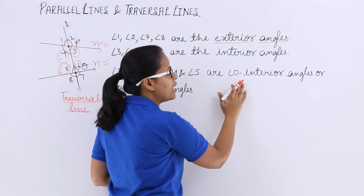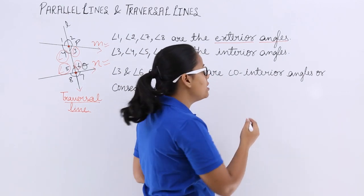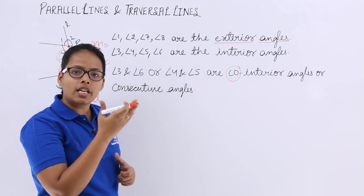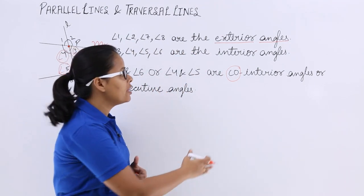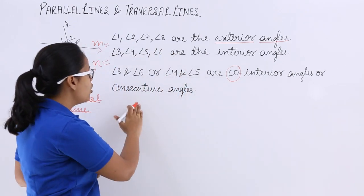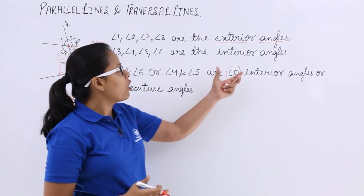So these are named as co-interior angles because these angles are interior angles and why I have written co with it—because they are lying on the same side of the transversal line. That's why these are co-interior angles or you can also say consecutive angles. So based on all of these terms...